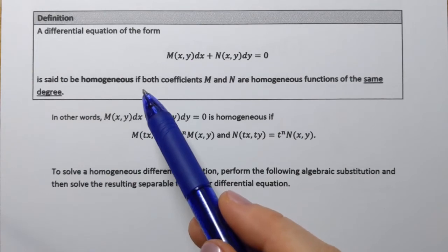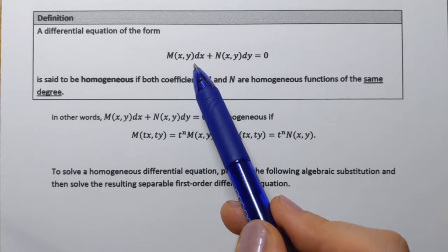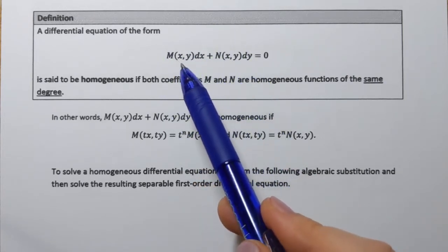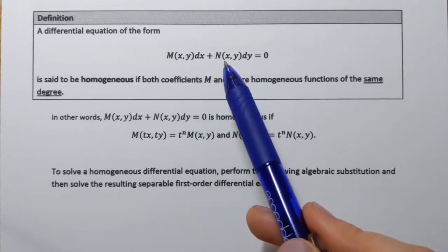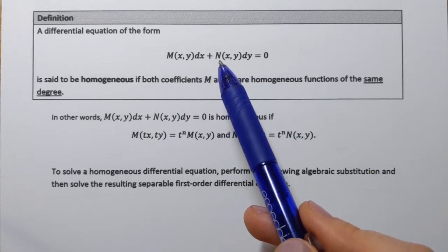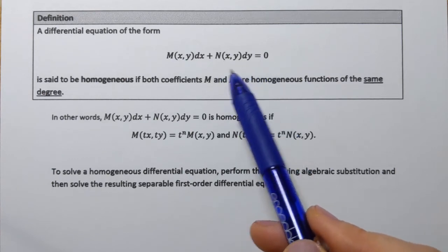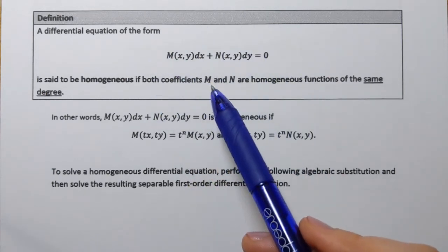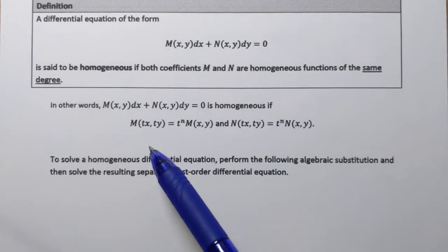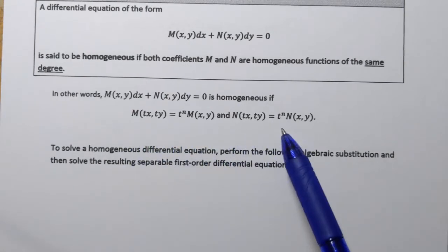In other words, this definition says that if you look at the coefficients of the differential equation — whatever stands in front of dx and in front of dy — and you find that those two functions are homogeneous, that's one requirement, and of the same degree, that's the second requirement, then we can say that the equation itself is a homogeneous differential equation. And what it means for functions to be homogeneous is written here, and you should recognize this if you watched the previous video.